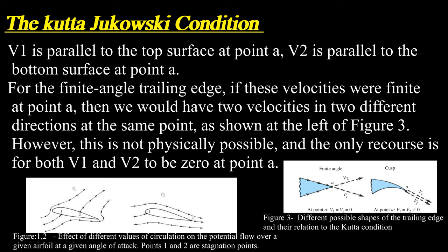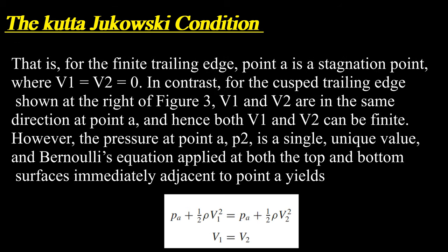However, this is not physically possible, and the only recourse is for both V1 and V2 to be zero at point A. That is, for the finite trailing edge, point A is a stagnation point where V1 equals V2 equals zero.